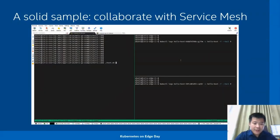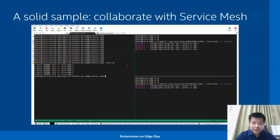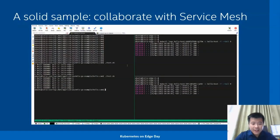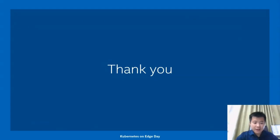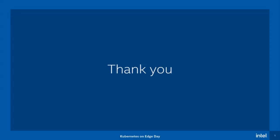The left pane is the machine simulating the client that would like to access the application through the hub. The right top is the edge1 cluster, and below is the edge2 cluster. We do several tests on the client side. We can see the requests are almost equally sent to the two edges. That's all — thanks for your attention. Hopefully you enjoyed our journey and can utilize our work in more scenarios. Thank you.